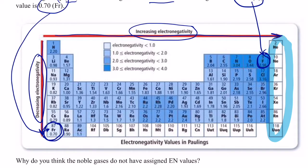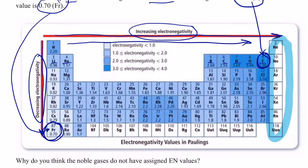Why would fluorine be so good at attracting electrons to itself? Think about atomic radius. When you go across period two from lithium to beryllium to boron to carbon to nitrogen to oxygen to fluorine, the atomic radius decreases. Therefore, the atoms can attract electrons to themselves more easily because they are so tiny when you go across a period — it has something to do with atomic radius. When we move to the right, the radius decreases.